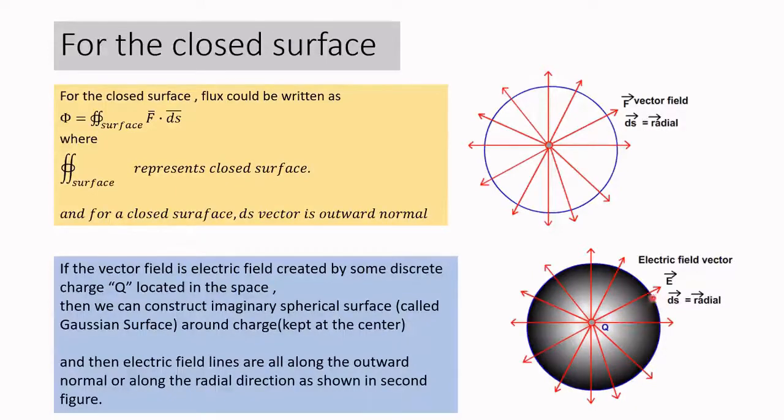This radial direction happens to be the same as the direction of ds bar. So this is where we are referring to the closed surface.